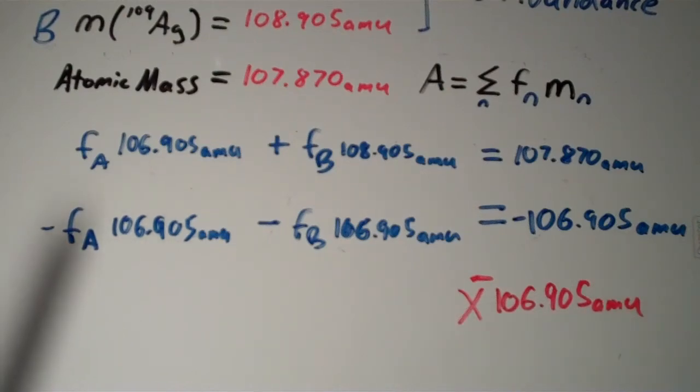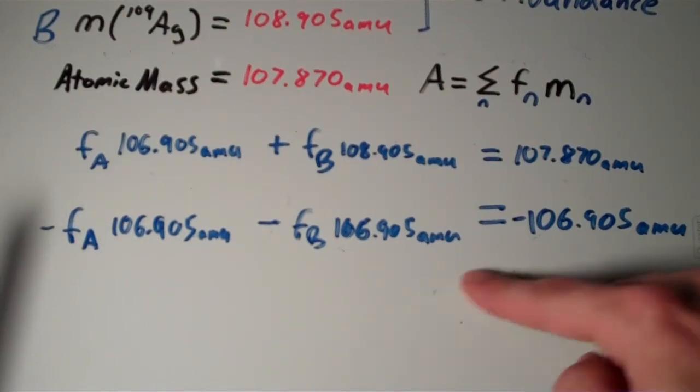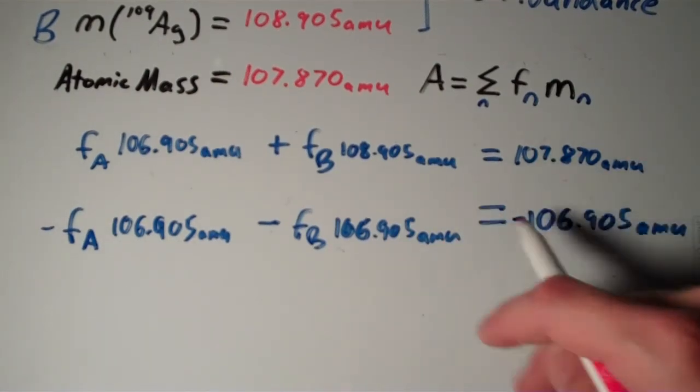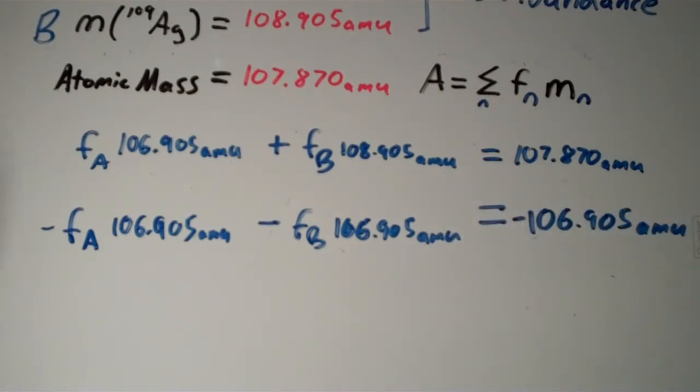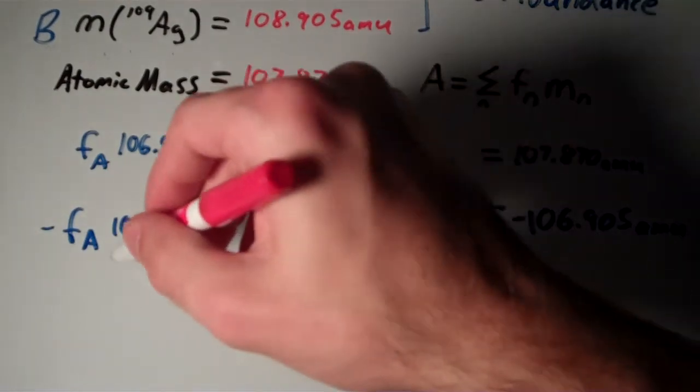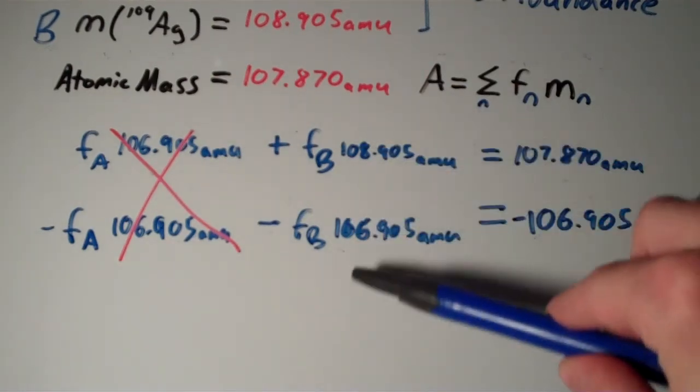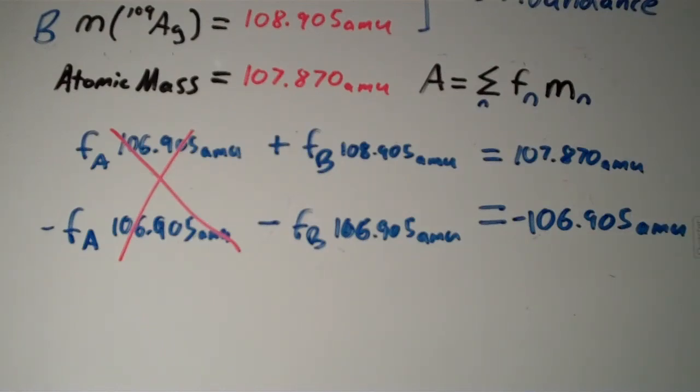The reason why I chose this factor, negative 106.905, to multiply the bottom equation by is because if we add these two equations together, which is valid, then these two terms will cancel out. So if I have 106.905 AMU of something and I subtract away 106.905 AMU of something, then I'll get nothing. Which means we're left with nothing but the FB term and a constant, which is great. That's what we want.